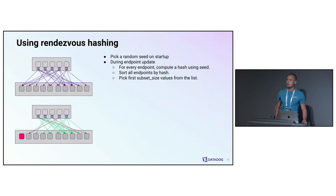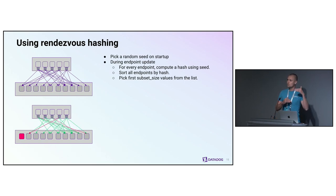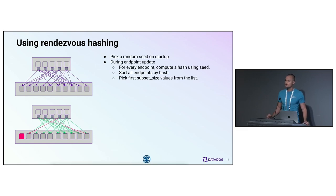One of the cons shown for random subsetting was high connection churn. In the final state, are you still dealing with connection churn? The connection churn part is almost completely eliminated by using rendezvous hashing. The end product we have — the combination of random subsetting with rendezvous hashing plus PID — addresses this problem, so our connection churn is very low after applying this.